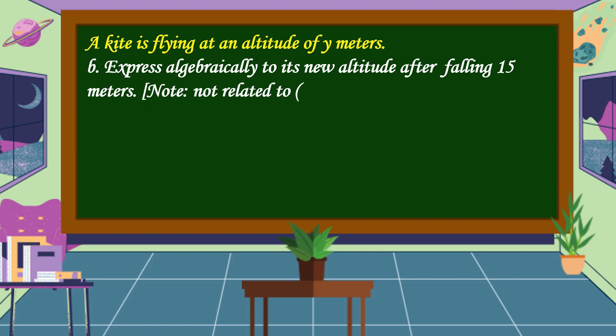Note, not related to A. Let's translate: y meters is y. After falling means diminished by, and the symbol is subtraction sign. 15 meters is 15. Then let's make an algebraic expression: y minus 15.